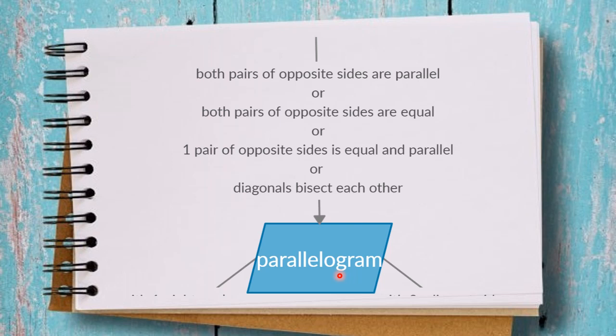We are going to start with the parallelogram. In my opinion, it's the most important one to know how to prove and understand very well, because it is the base floor and we are going to build up on it. The first way to prove a parallelogram is that both pairs of opposite sides are parallel — this pair and this pair must both be parallel.